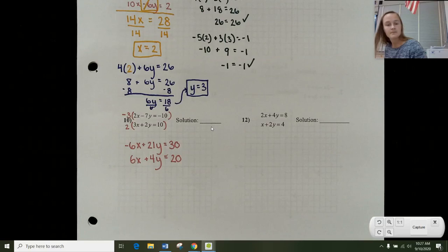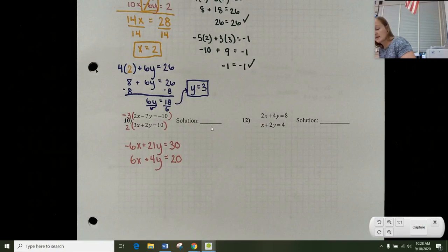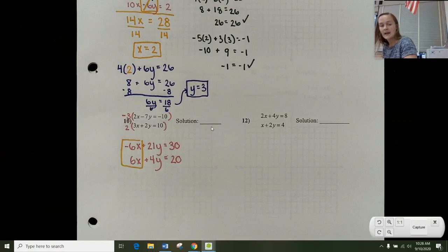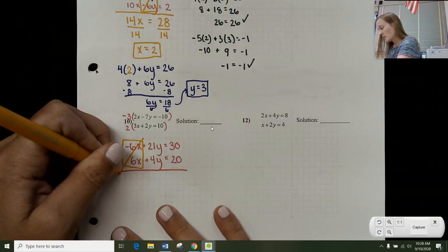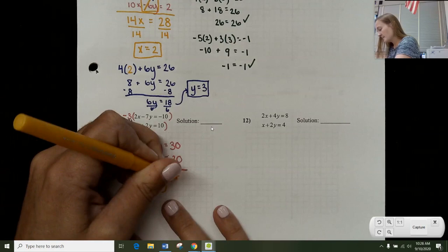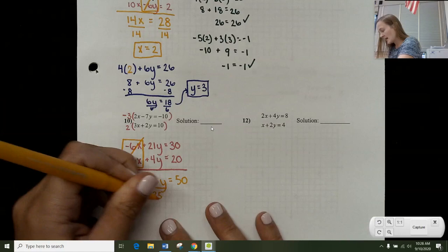So at this point, now that I've adjusted both, I see my same coefficient, opposite signs. And I'm going to add down by combining the two equations. So when I add negative 6x plus 6x goes away and I end up with 25y equals 50. I divide by 25 and I get y equals 2.